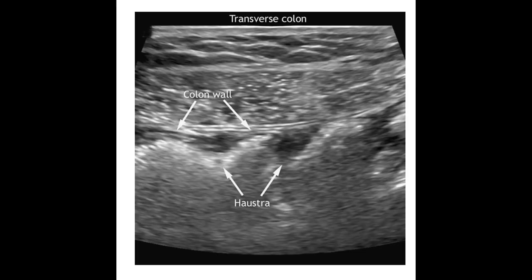Here we're taking a look at the transverse colon. This shows nicely the haustra — the little lumps that make the colon look like it has little sections or segments to it. They take on a saccular appearance, and the haustra give the colon a little bit more of a cloud-like appearance.